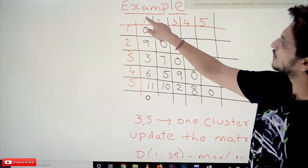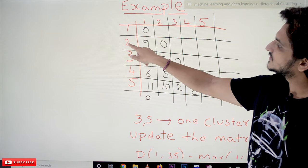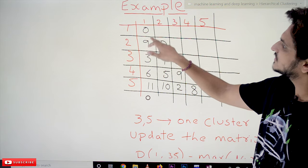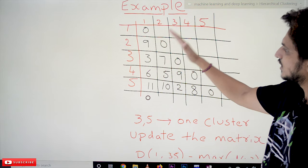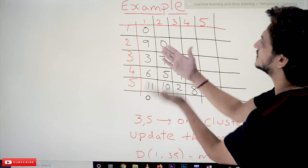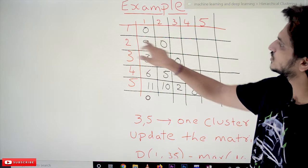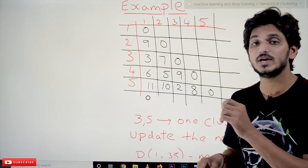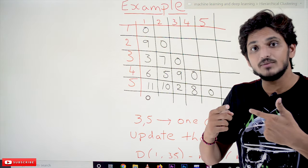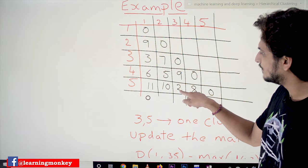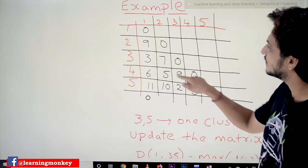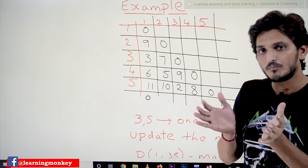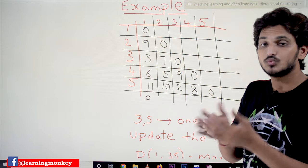Out of 5 points, point 1 to point 1 distance is 0. Point 2 to point 1 distance is 9. Like that we have written the distance matrix. Since point 2 to point 1 and point 1 to point 2 are the same distance of 9, we only need half of the matrix — the remaining half is just a replicate. Out of this distance matrix, we pick the two clusters having minimum distance. The minimum distance value is for points 3 and 5, so cluster 3 and cluster 5 are combined as one cluster.